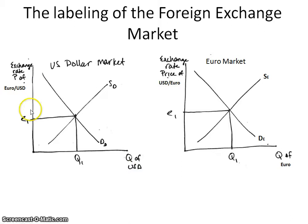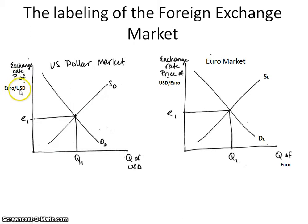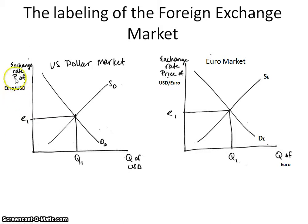Over on the vertical axis — and this is where people get things wrong — you need to label it with the exchange rate. What we're looking at is the price of a euro per U.S. dollar. To remember this, whatever is on the horizontal axis is my denominator, so that's how I remember it's the price of a euro per U.S. dollar.